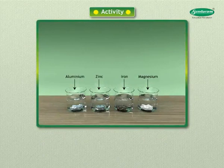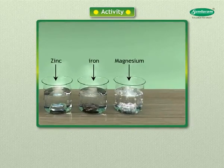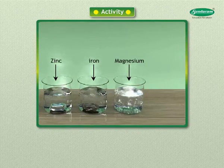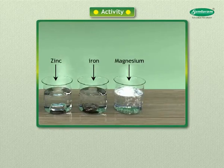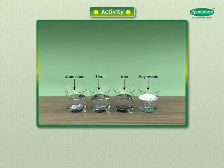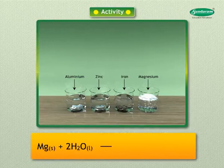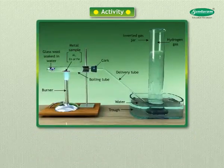Put the metals that did not react with cold water in beakers half-filled with hot water. Magnesium reacts with hot water to form magnesium hydroxide and hydrogen gas. Magnesium also starts floating since bubbles of hydrogen gas stick to its surface. Mg(s) + 2H₂O(l) → Mg(OH)₂(aq) + H₂(g).